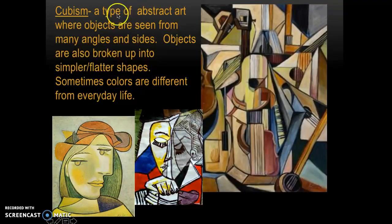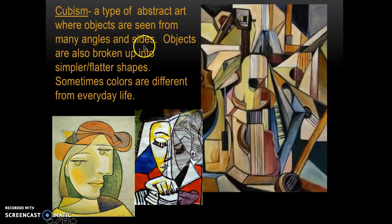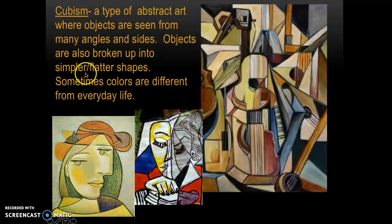Cubism is a type of abstract art where objects are seen from many angles and sides. Objects are also broken up into simpler or more flat shapes. Sometimes colors are different from everyday life.